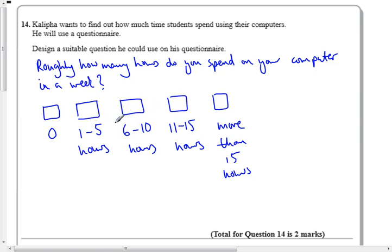Now you could argue what happens if I use it for 5 and a half hours. Well, I've got around that by saying roughly how many hours do you spend on your computer in a week. You could have had up to 5 hours, up to 10 hours, up to 15 hours, and then more than 15 hours. You could have filled it that way. This will get you the marks. Check that your question follows the same pattern that mine does.